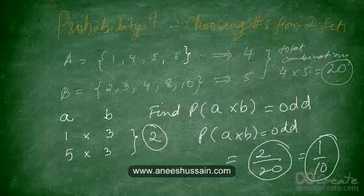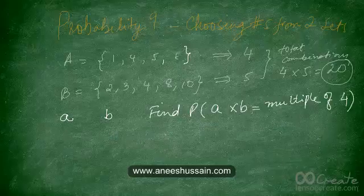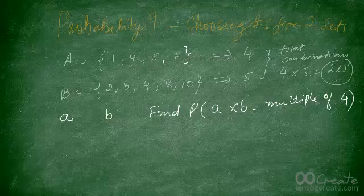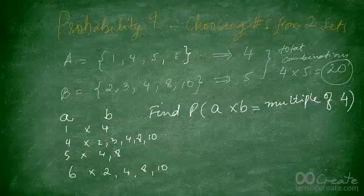Here's another question using the same data. Choose a number from set A and a number from set B randomly. Find the probability that A times B is a multiple of 4. Hit pause and try solving this problem before continuing.